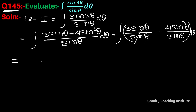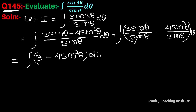The sinθ in the numerator and denominator cancel. So we get the integration of (3 minus 4sin²θ) dθ, which equals 3 times the integration of dθ minus 4 times the integration of sin²θ dθ.